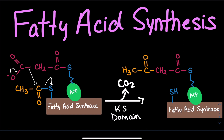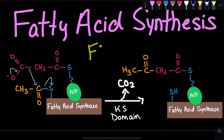In fatty acid synthesis, we repeatedly use malonyl-CoA to create a 16-carbon fatty acid via the enzyme fatty acid synthase. Once we get to 16 carbons, we cleave that fatty acid off. It's important to note that the enzyme used in vertebrates is called FAS-1, and FAS-1 is only able to synthesize 16-carbon fatty acids.